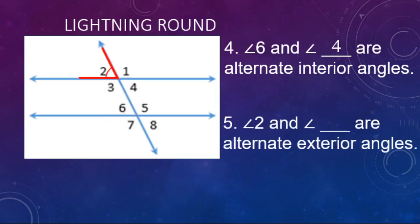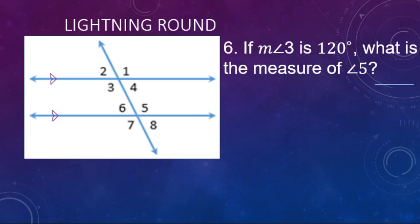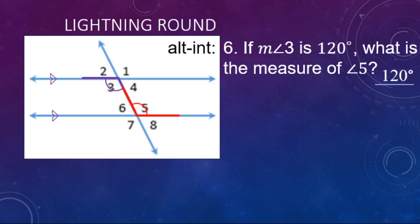Number five: angle two and angle blank are alternate exterior angles. Ignoring interior angles three, four, five, and six, the alternate exterior angle to angle two — on the opposite side of the transversal — is angle eight. Number six: if angle three is 120 degrees, what is angle five? They are alternate interior angles, which are congruent, so angle five is also 120 degrees.